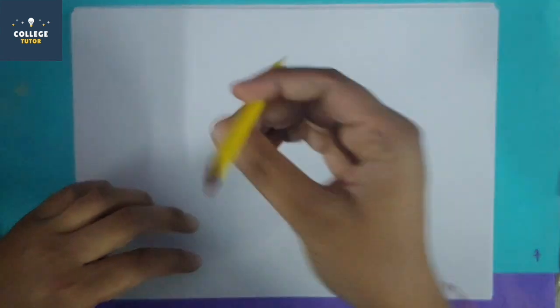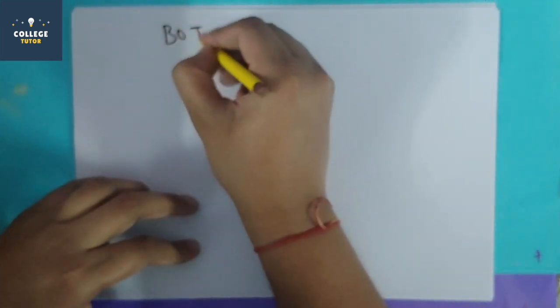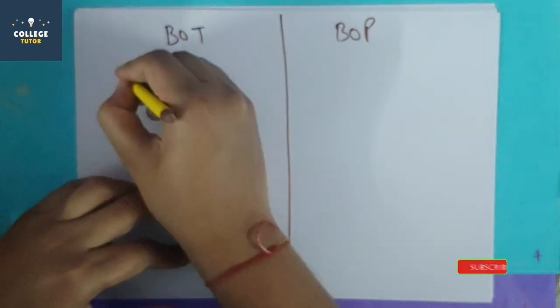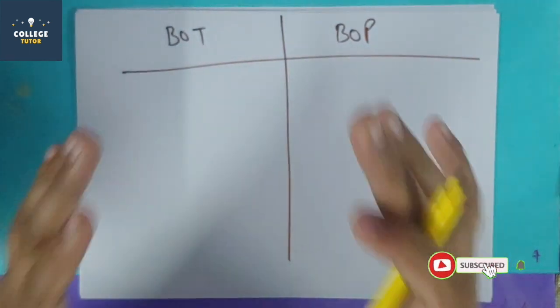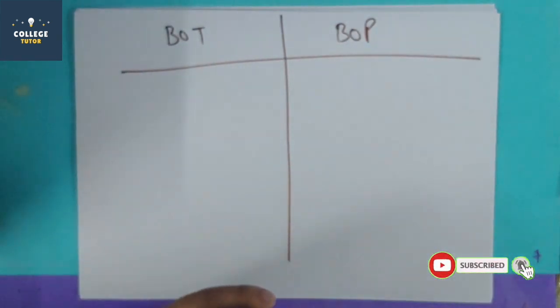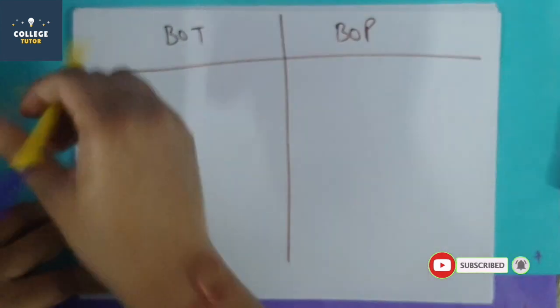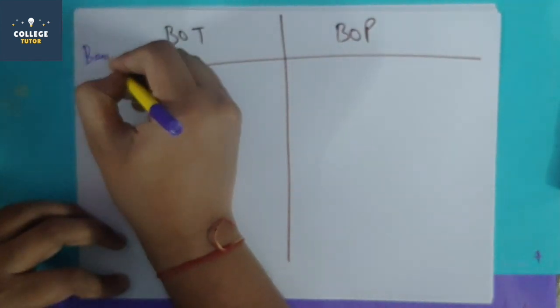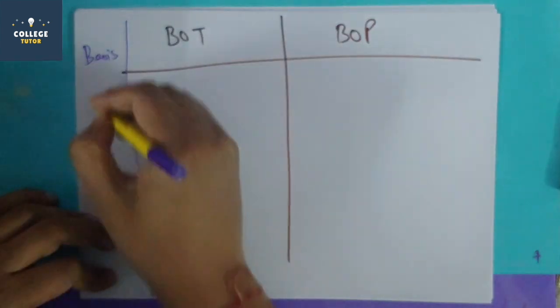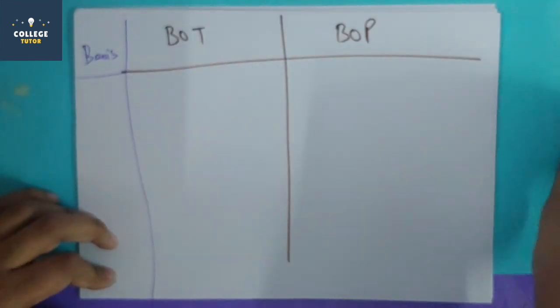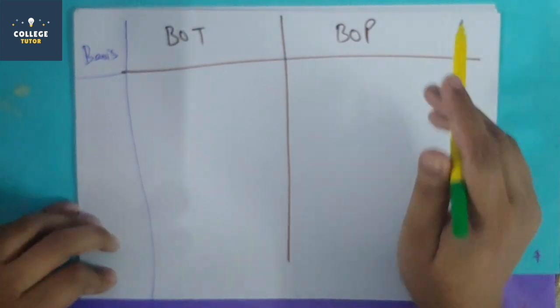Balance of trade and balance of payment are many times confused. And since we have understood both individually, the differences will be covered very quickly. As we always do differences, first of all, we will write the basis and then compare on the basis of it. First of all, we will write both meanings.